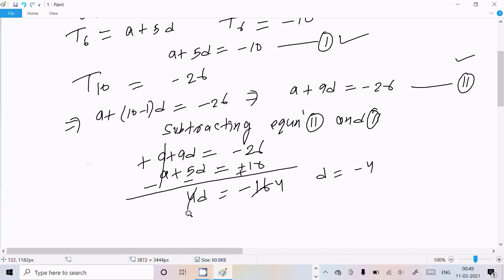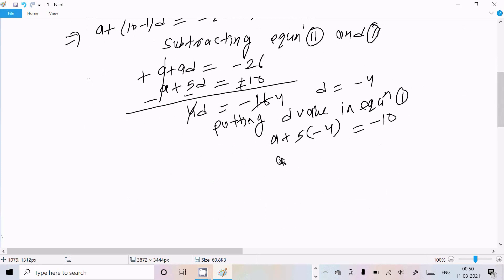Now let's find out the first term. So putting D value in equation 1: A + 5 × (-4) = -10. This becomes A - 20 = -10.